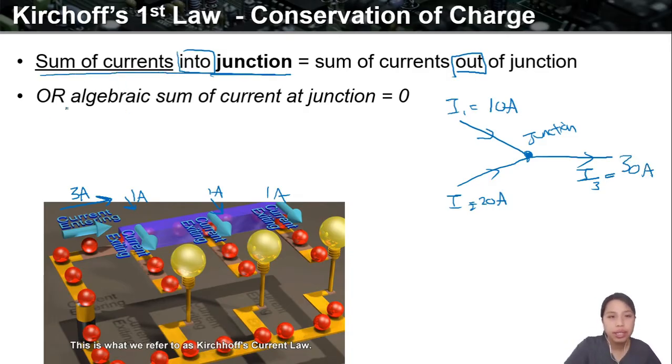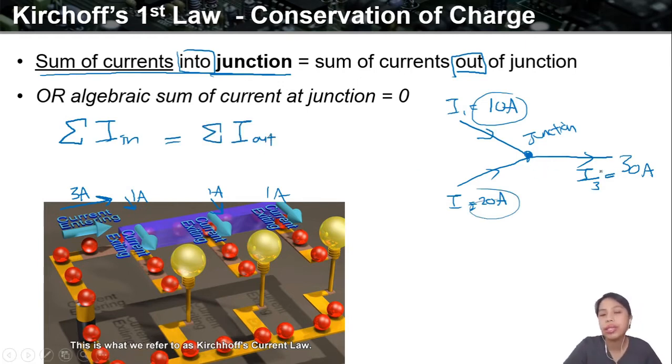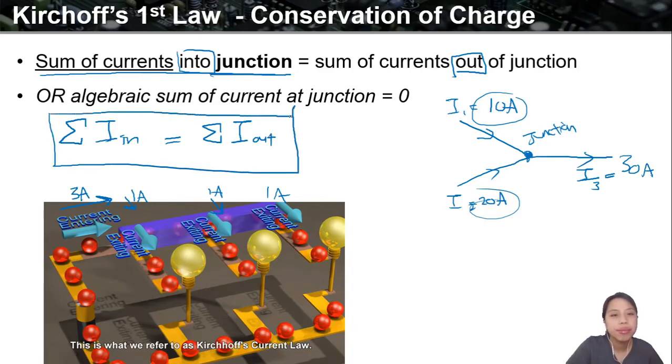So what this means, sum of currents into junction, you can rewrite it as sum of currents in, which is your 10 and your 20, equals to your sum of currents out of junction. So whatever is out, only got 30 out. In and out. Done. This is also linked to the idea of conservation of charge. Conservation means your charge cannot just be created, cannot just disappear like that. So it has to be conserved. All the charges in the circuit, they can't just vanish.